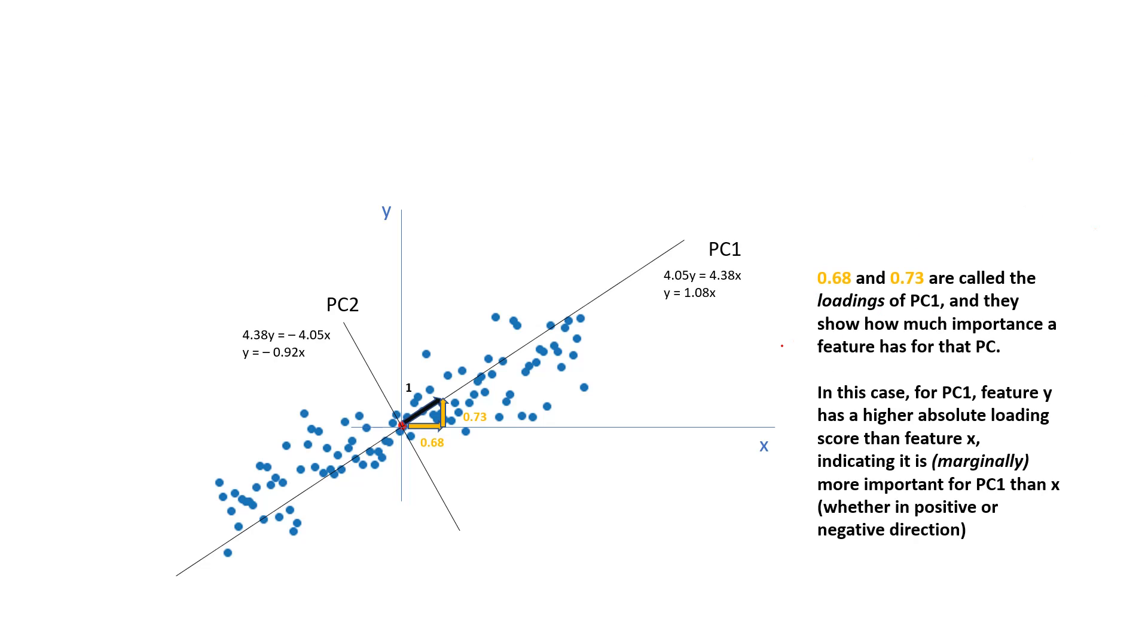In this case, for example, for principal component 1, we see that it is made up of 0.68 units of feature x and 0.73 units of feature y. Feature y is marginally more important than feature x for this principal component.